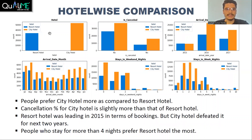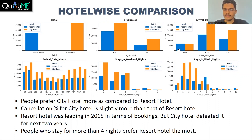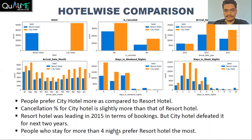After univariate analysis, we started comparing all features hotel-wise. City hotel has higher number of bookings compared to resort hotel. The cancellation percent of city hotel is slightly more — approximately 40% — while for resort hotel it is approximately 30%. In all months, city hotel has comparatively higher number of bookings. People who stay for more than four nights prefer resort hotel the most.